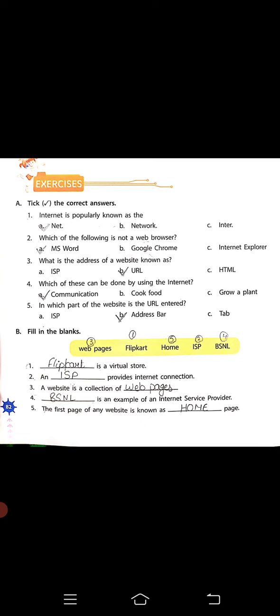Fourth, which of these can be done by using the internet? Beta, internet se global planning ho sakta hai, communication. Fifth, in which part of a website is a URL entered? Beta, URL kahan pe enter hota hai? Address bar pe.